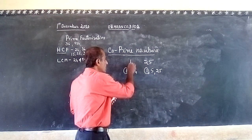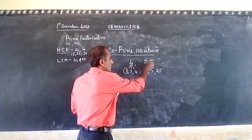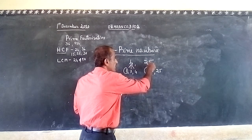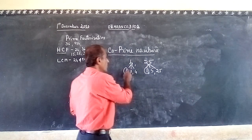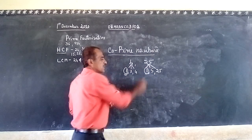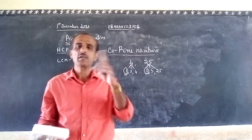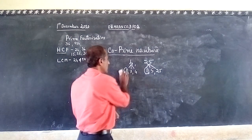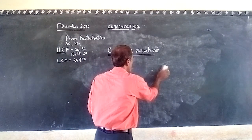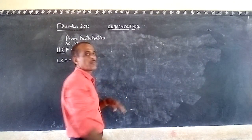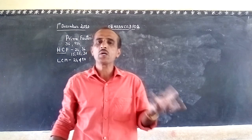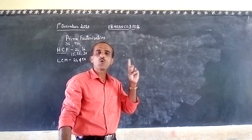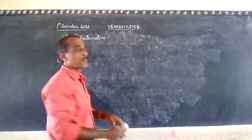The factors of 4 are 1, 2, and 4. The factors of 25 are 1, 5, and 25. Here, one is a common factor to both numbers. If one is the only common factor, then those numbers are called co-prime numbers. Two or more numbers having only one as a common factor are called co-prime numbers.